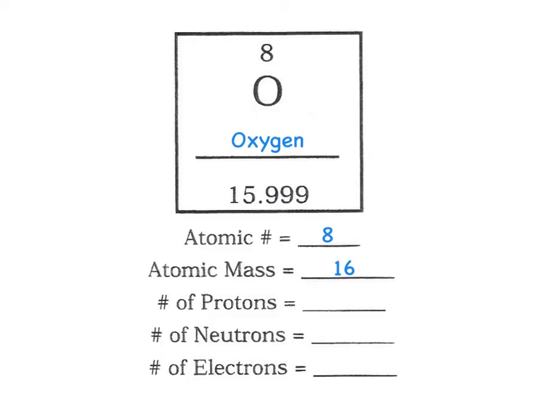So now I've got to figure out the number of protons. I just took notes on that. What represents the number of protons? That's right — it's my atomic number. My atomic number doesn't just mean my number of protons; it also represents the number of electrons. So we're going to cheat and fill in both blanks for protons and electrons, because Matterville needs to be stable, so my number of protons and electrons have to match.